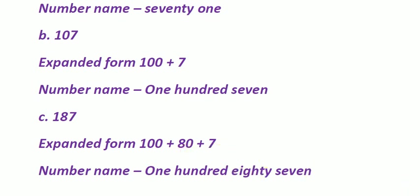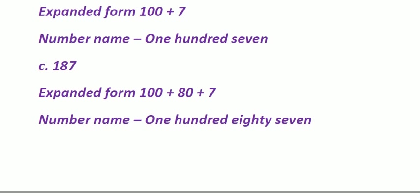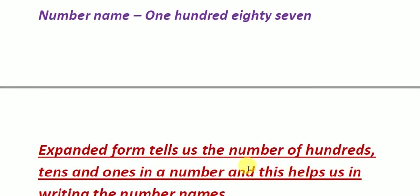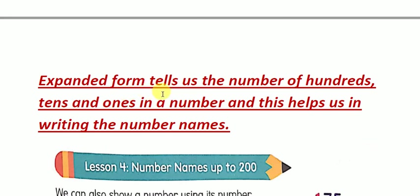The expanded form tells us the number of hundreds, tens, and ones in a number. See — number of hundreds, number of tens, and number of ones. So we can write the number names easily. Expanded form tells us the number of hundreds, tens, and ones in a given number, which helps us to write the number name.